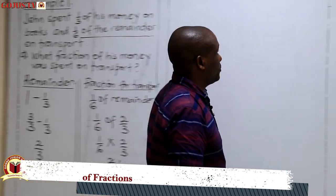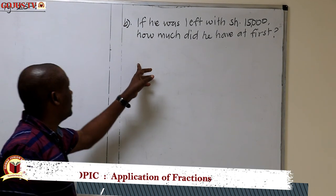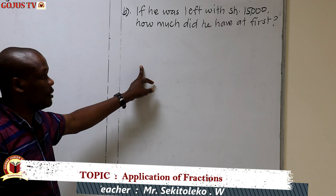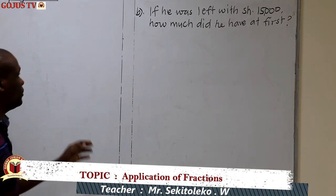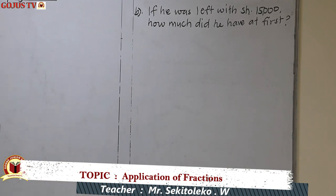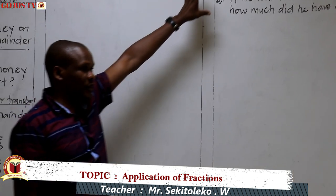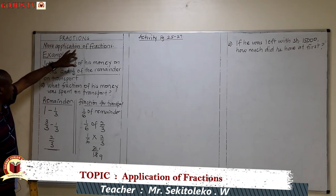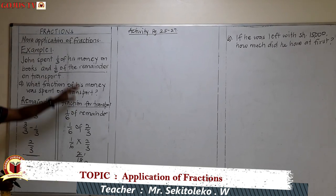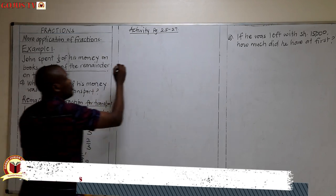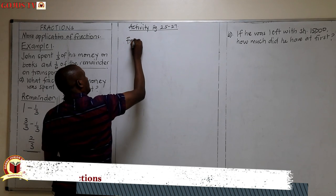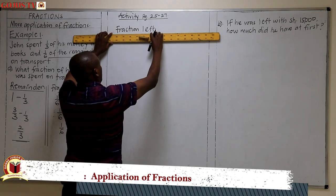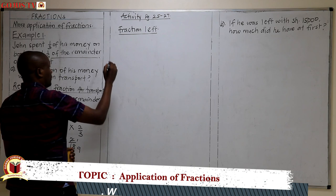That's the first part. Now we go to the second part: if he was left with 15,000 shillings, how much did he have at first? To handle this, we first need to find out what fraction was left after spending one-third on books and one-ninth on transport. So we need to get the fraction left first.